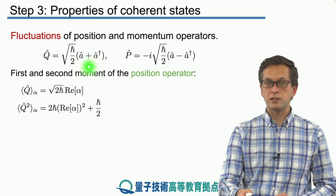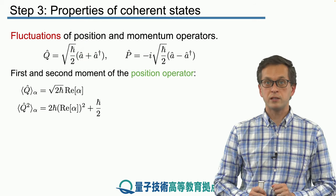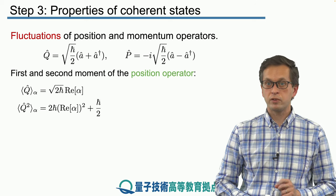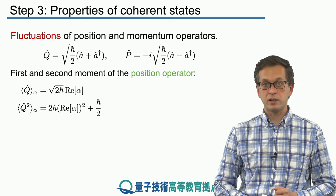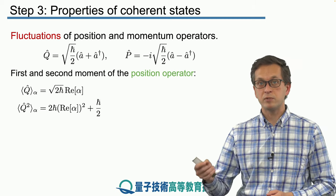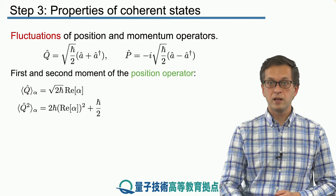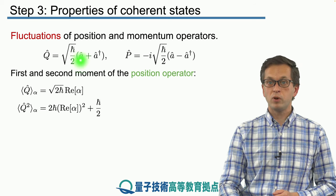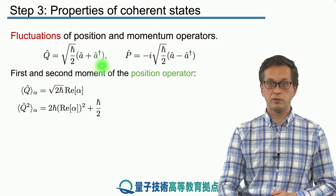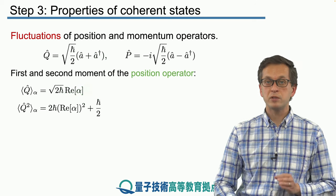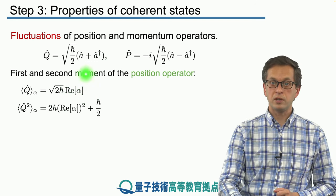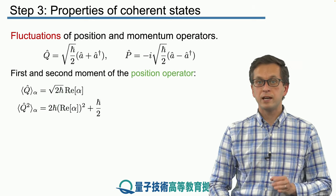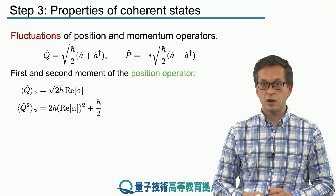We're going to sandwich the operator A between two coherent states denoted by alpha. We know that the coherent state is an eigenstate of the annihilation operator, so A acting on coherent state alpha just gives us the number alpha times coherent state alpha itself. Computing the average with respect to coherent states, we get alpha plus alpha conjugate, which is two times the real part of alpha. Substituting that in and canceling the factors of 2, we get square root of 2 h-bar times the real part of alpha as our average of the position operator.